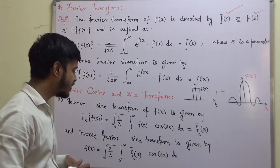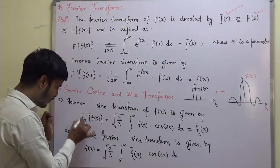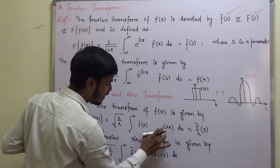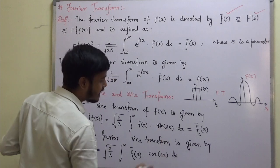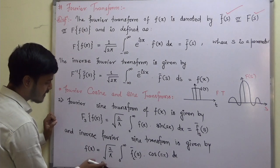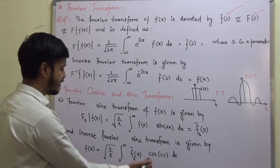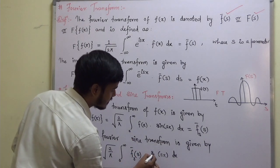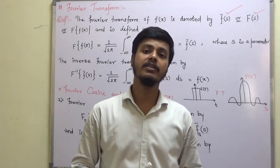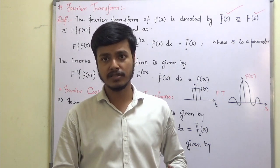The Fourier sine transform of f(x) is: Fs[f(x)] = √(2/π) ∫ from 0 to ∞ f(x) sin(sx) dx, written as f̄s(s). And the inverse Fourier sine transform is: f(x) = √(2/π) ∫ from 0 to ∞ f̄s(s) sin(sx) dx. These are the definitions of Fourier transform, its inverse, and the Fourier sine and cosine transforms with their inverses.